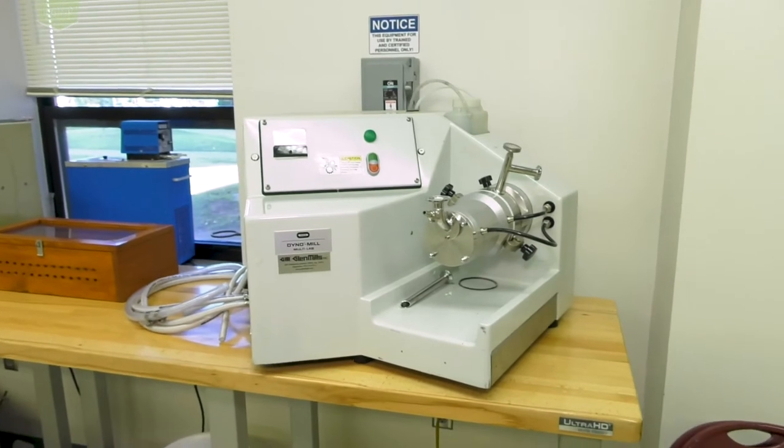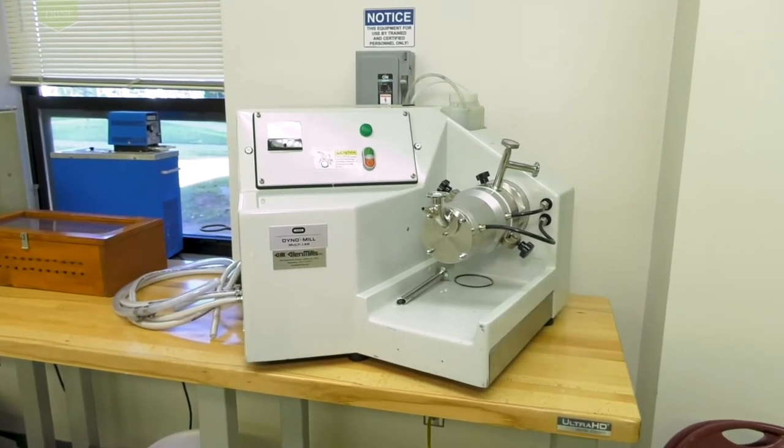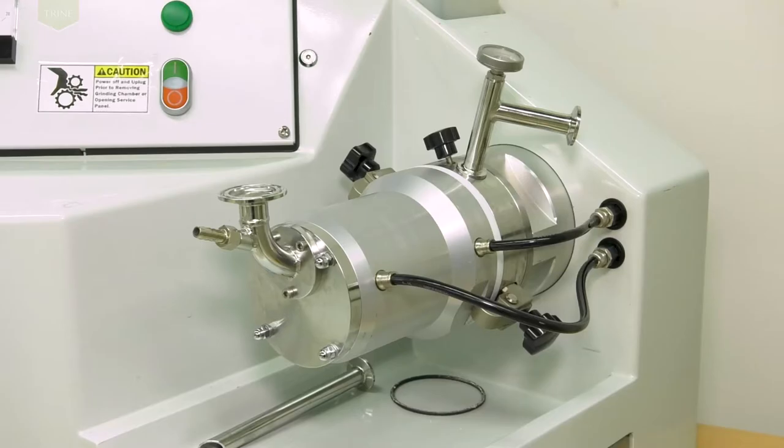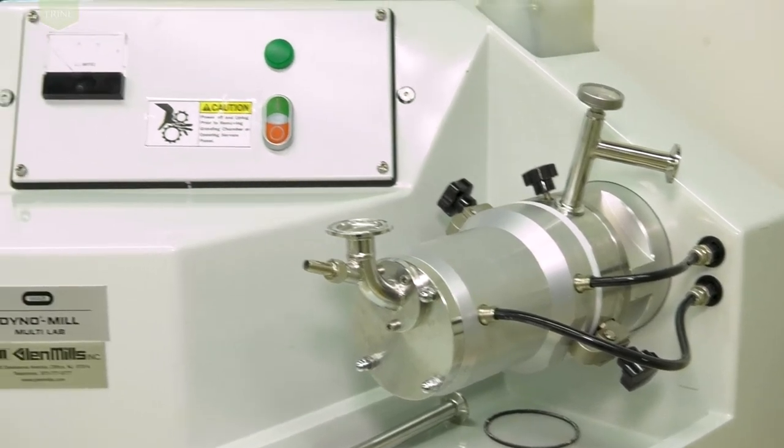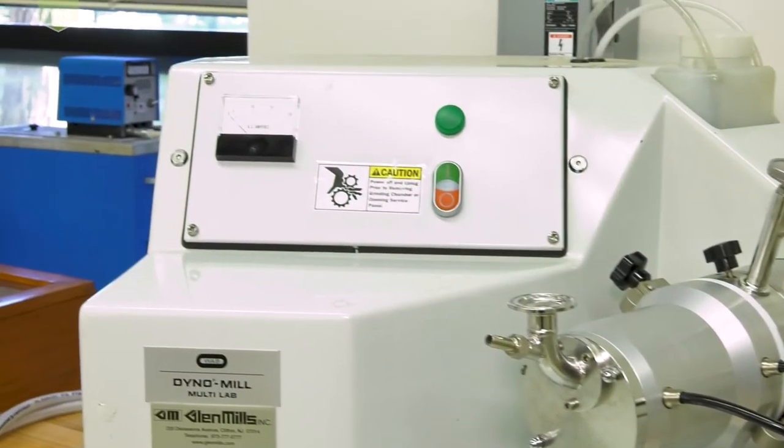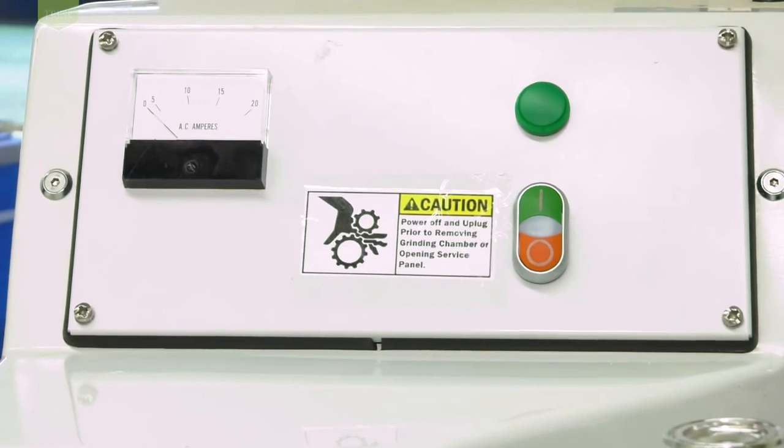The Glenn Mill Dyno Mill Multi Lab is a bead mill that allows for continuous production of emulsions. This equipment is used for senior projects involving consumer product development such as soaps, lotions, conditioners, or shampoos.